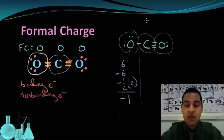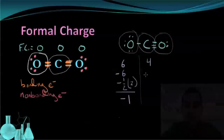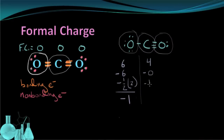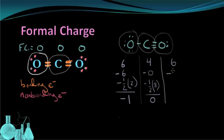Now let's move on to the carbon. Carbon starts with 4 valence electrons, has 0 non-bonding electrons, and has 4 bonds for a total of 8 bonding electrons. So 4 minus 0 minus 4 gives us 0 for the formal charge. The last oxygen — the one with the triple bond — starts with 6 valence electrons, minus 2 non-bonding electrons, minus half of 6 bonding electrons from the 3 bonds, giving us 6 minus 2 minus 3, which equals positive 1.